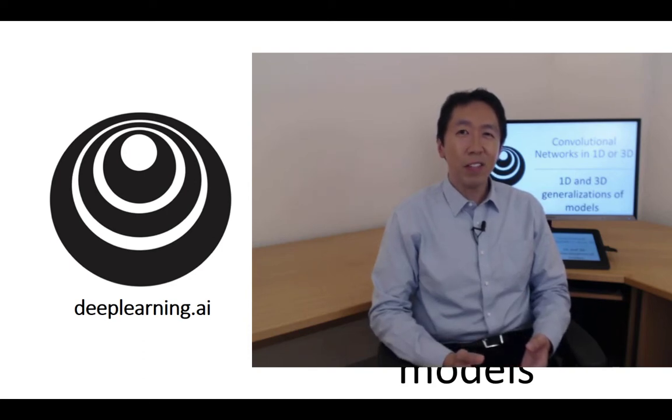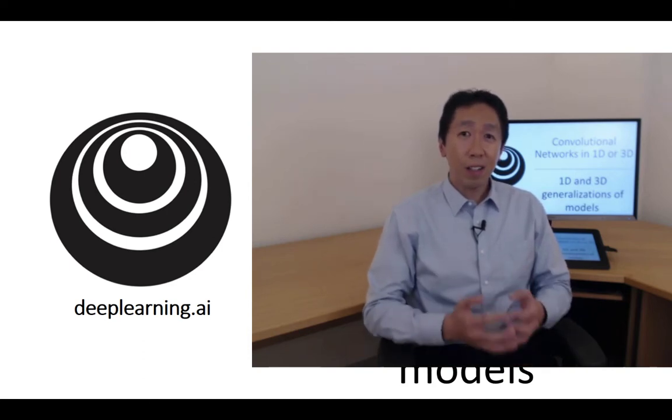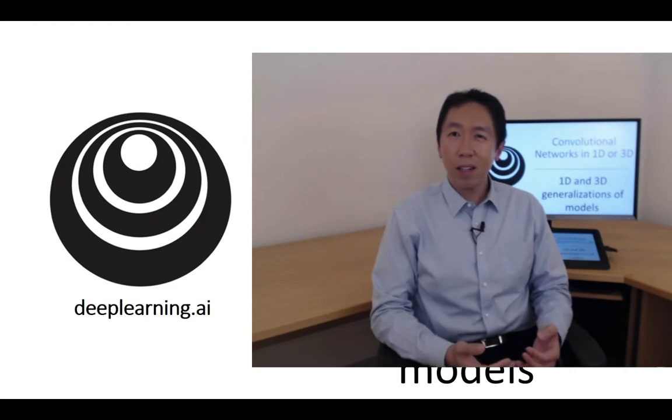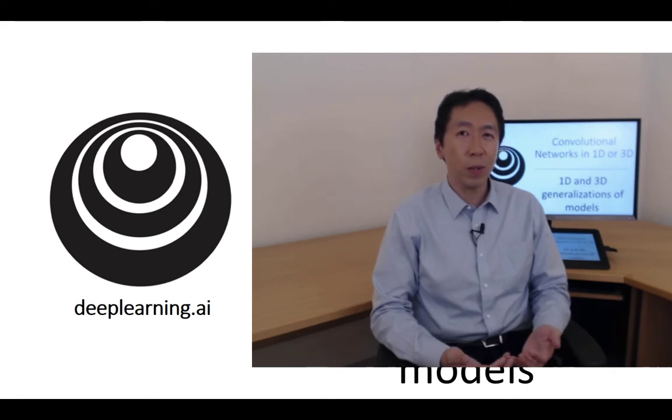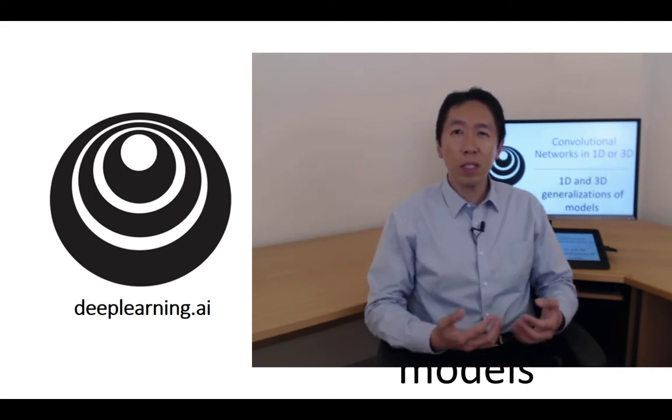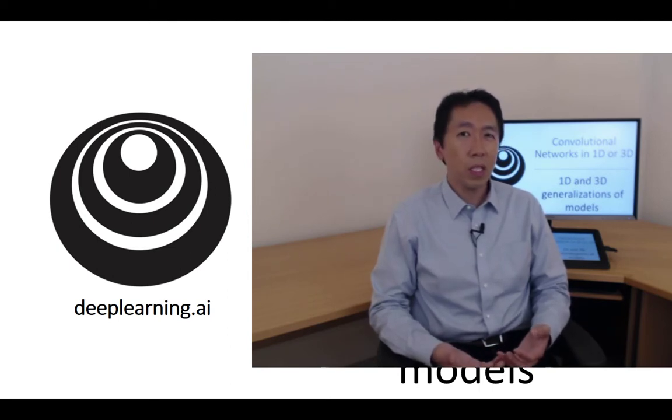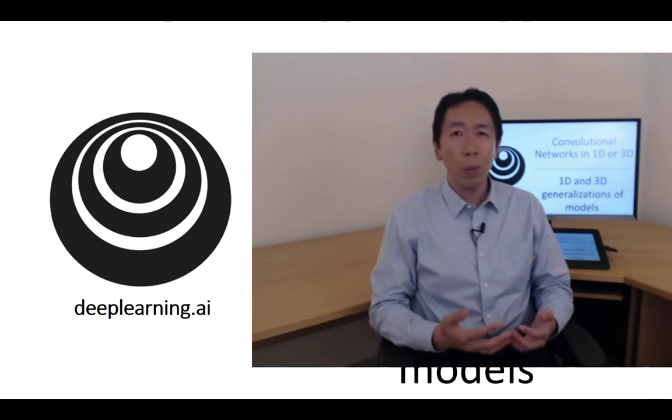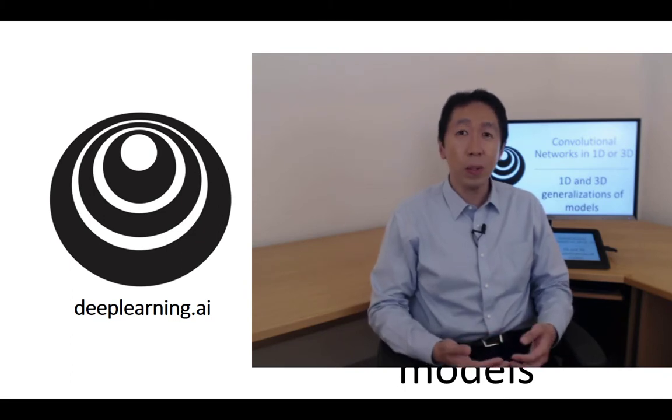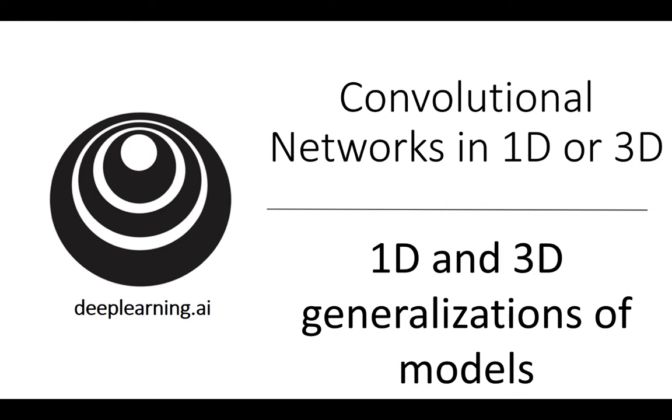You've learned a lot about ConvNets, everything ranging from the architecture of a ConvNet to how to use it for image recognition, to object detection, to face recognition and neural style transfer. Even though most of our discussion has focused on images, on 2D data because images are so pervasive, it turns out that many of the ideas you've learned about also apply not just to 2D images, but also to 1D data as well as to 3D data. Let's take a look.